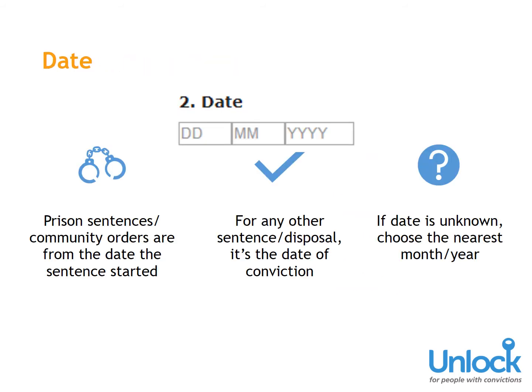Date: For prison sentences and community orders, you'll need to enter the date the sentence started. For all other sentences or disposals, enter the date of conviction. If the date is unknown, choose the nearest month or year.